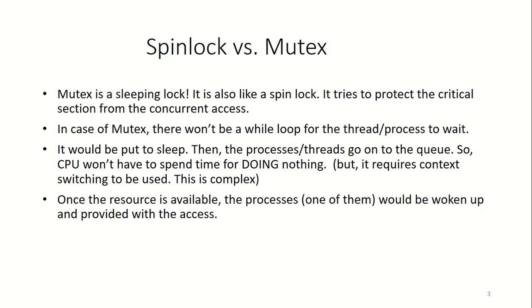Instead, with mutex we put the process or thread to sleep. If there are multiple processes trying to access the critical section, they will be put in a queue. The CPU does not have to waste time doing nothing. However, this approach requires context switching — once the resource is available, we need to update the PCB (process control block), update the stack pointer, and copy stack contents. It's more complex, but we are not wasting CPU time.